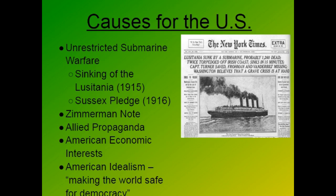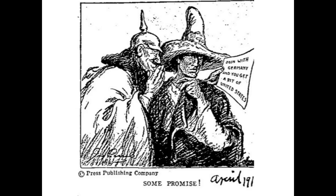There is also the Zimmermann Note, in which Germany tries to get Mexico to fight the United States. This was basically a telegram intercepted by the British, who sent it on to the Americans. The goal was to keep the United States busy, because Germany didn't want the U.S. to join England and France — countries the U.S. clearly had trade relations with and that were both democracies.